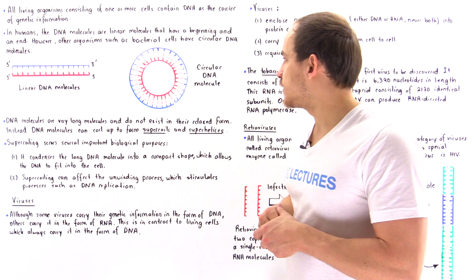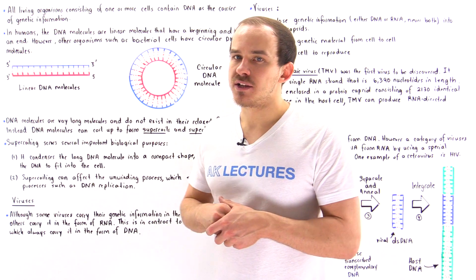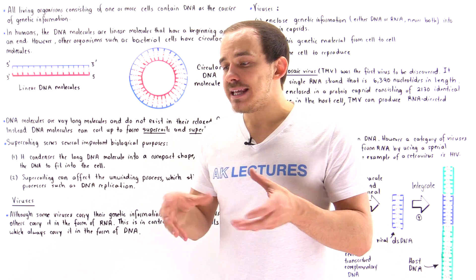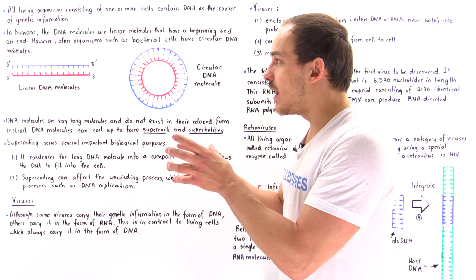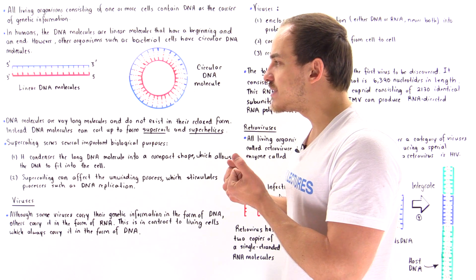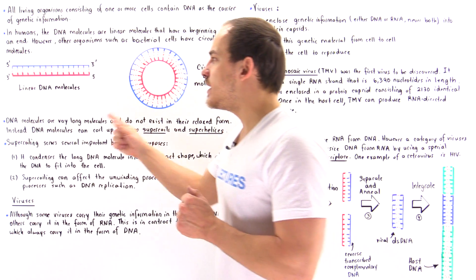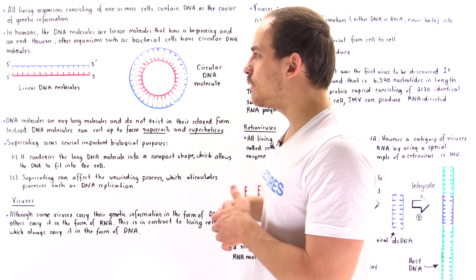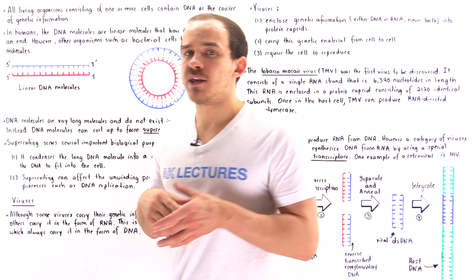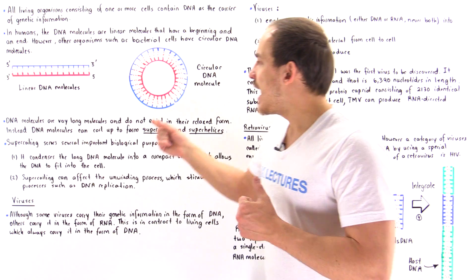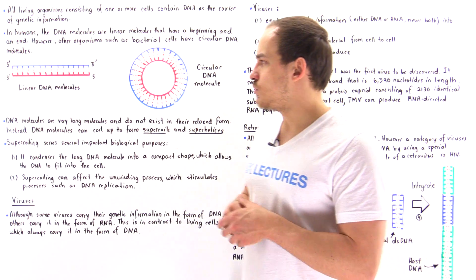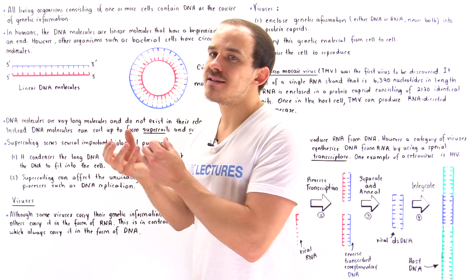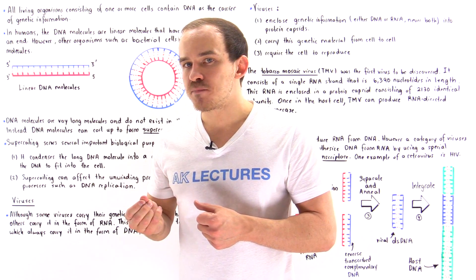Linear DNA molecules and circular DNA molecules are actually relatively large and relatively long. If we zoom in into the cell of either bacterial cells or our own human cells, we're not going to see these DNA molecules existing in that extended form. Instead, the linear DNA molecules found in our own cells and the circular DNA molecules found in bacterial cells are going to condense via this process of supercoiling.